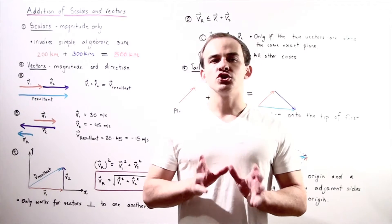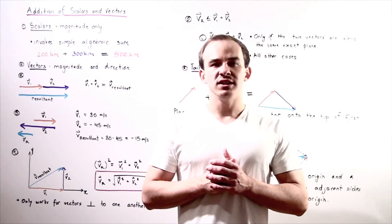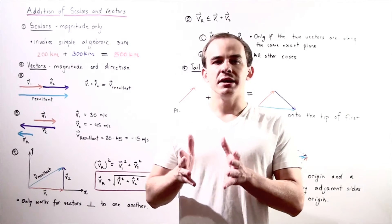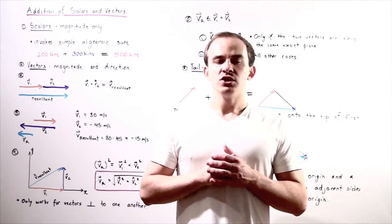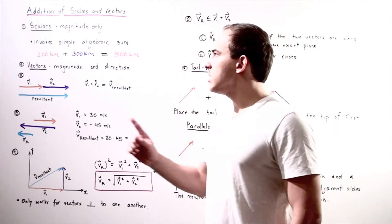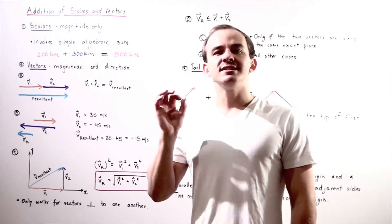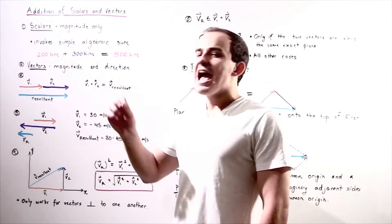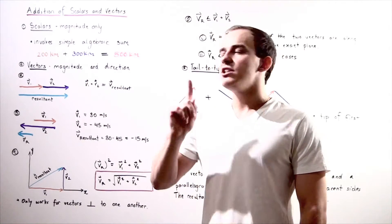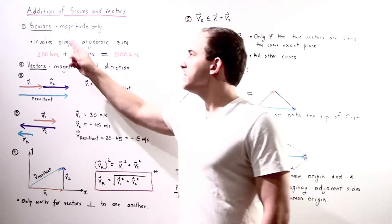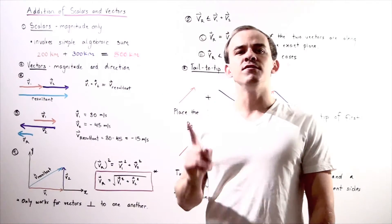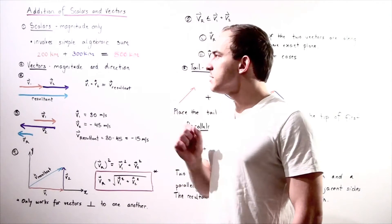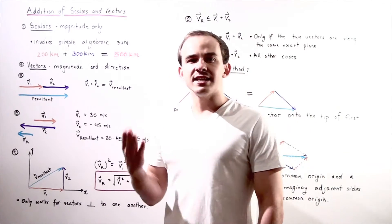Recall that scalars and vectors are two different types of physical quantities. Because they differ from one another, adding them involves different methods. Let's begin with the addition of scalars. Recall that scalars have magnitude only and no direction, and that means addition of scalars involves simple algebraic sum.